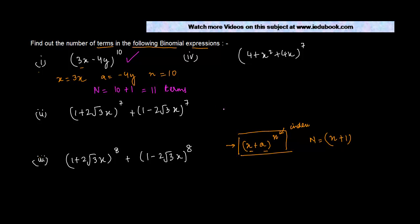Now let's move on to the second case. This is a little interesting because if you notice this is something like 1 plus 2 root 3x plus 1 minus 2 root 3x and both of them are raised to the same power n. So this kind of expression basically can be written as x plus a to the power n plus x minus a to the power n.